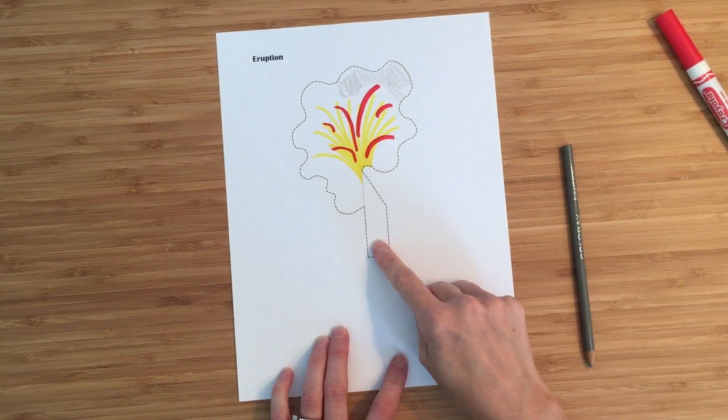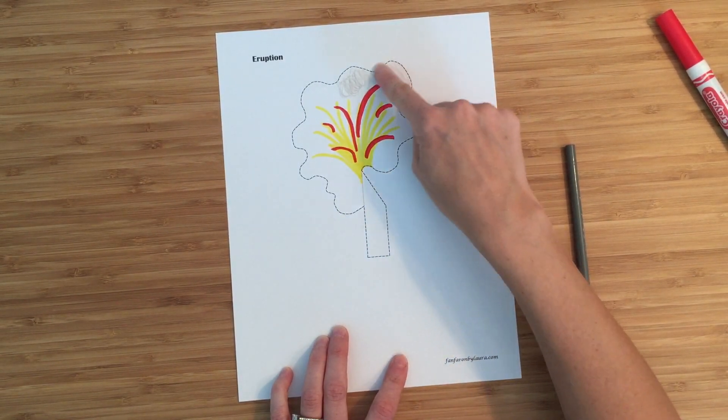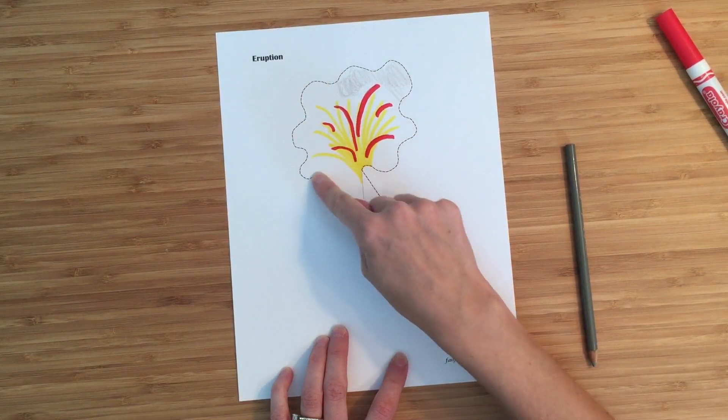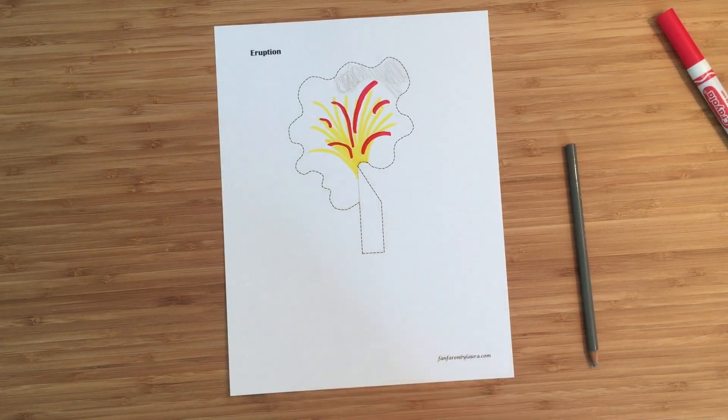Now, when you're done coloring this, I would suggest that you cut it out. So you're going to cut on all of these lines, the dashed black line. And then I will color the exact same thing on the back so that you'll be able to see it on both sides of the volcano when you put it together.